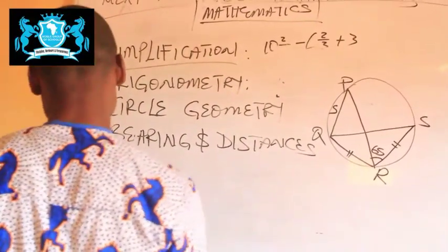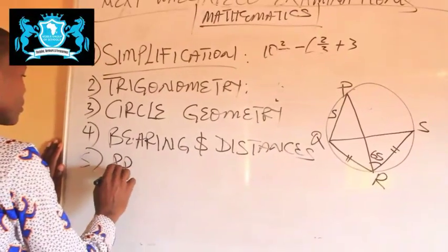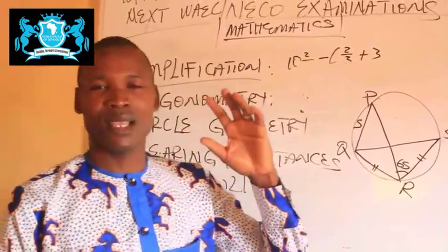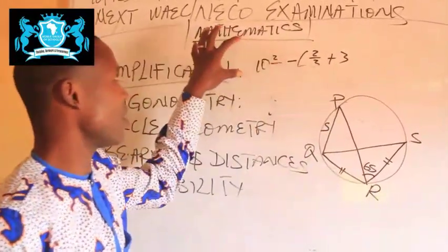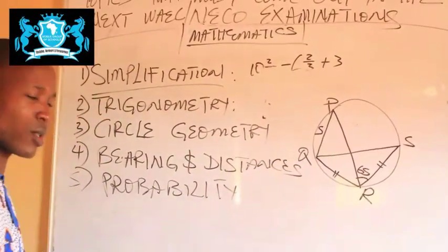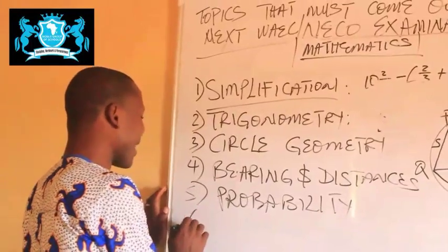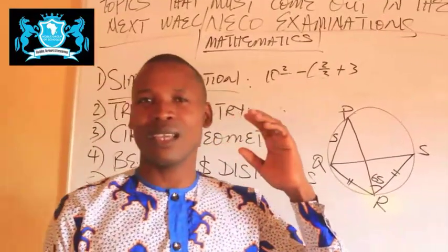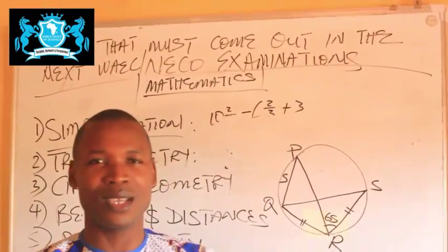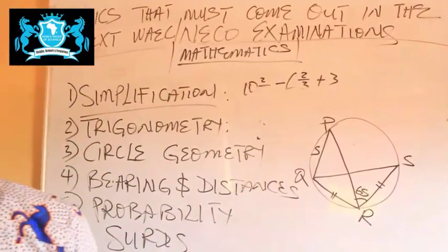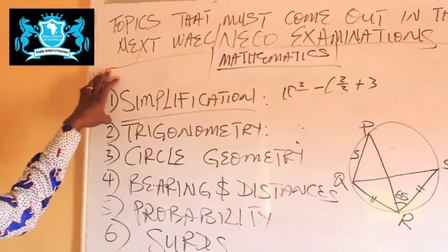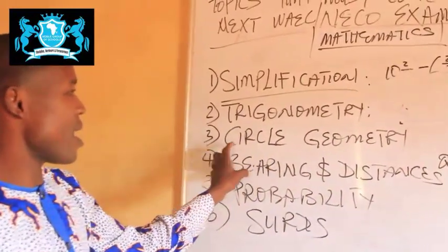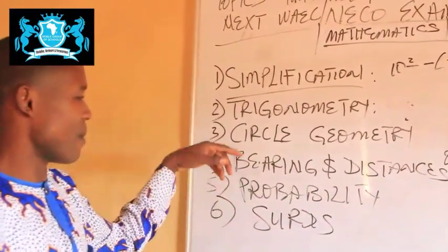The next topic that will come out is Probability. This one comes out both in the objective and in the theory, so as you are studying mathematics for this examination, also focus on probability questions. Another topic you cannot escape is Sets. Sets always come out in both theory and objective across WAEC, NECO, and JAMB, so focus your attention on Sets. So far we have: 1) Simplification, 2) Trigonometry, 3) Circle Geometry, 4) Bearing and Distances, 5) Probability, 6) Sets.